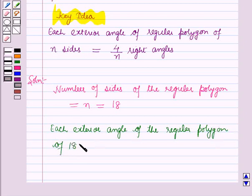is equal to 4 by n where n is equal to 18, so 4 by 18 into right angles.